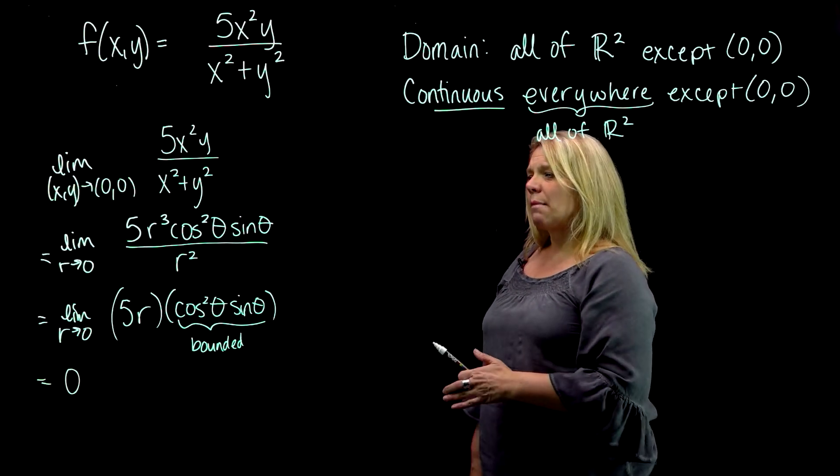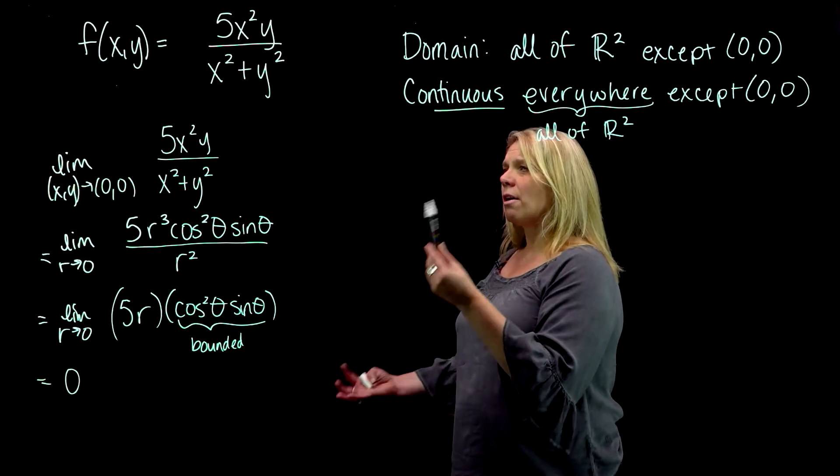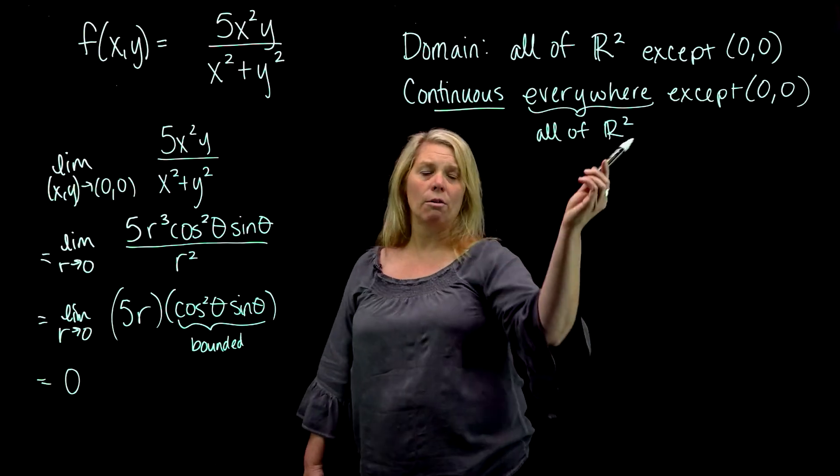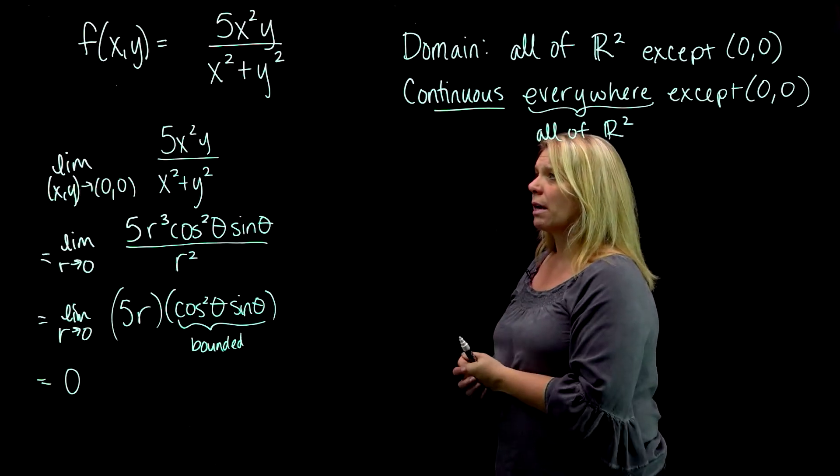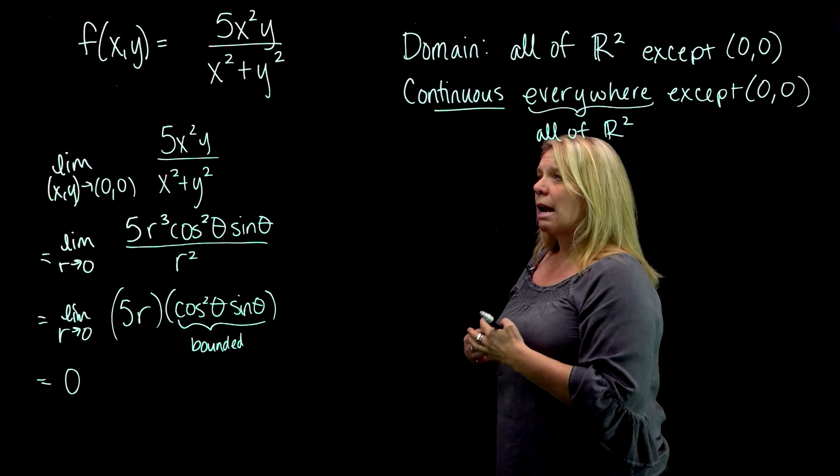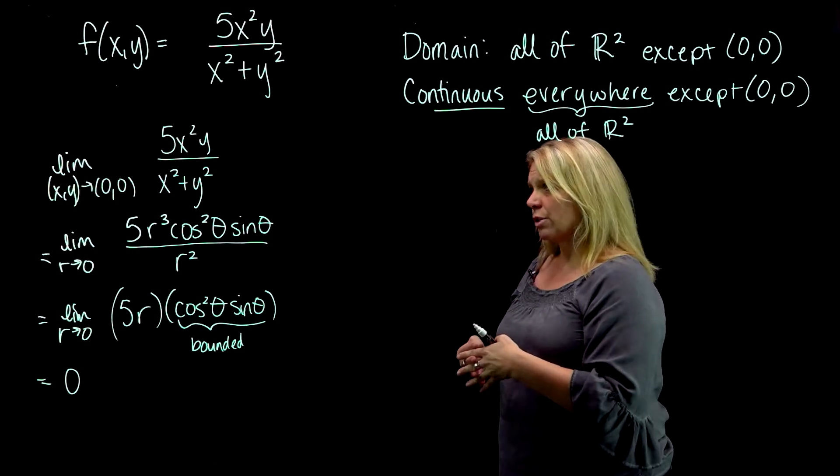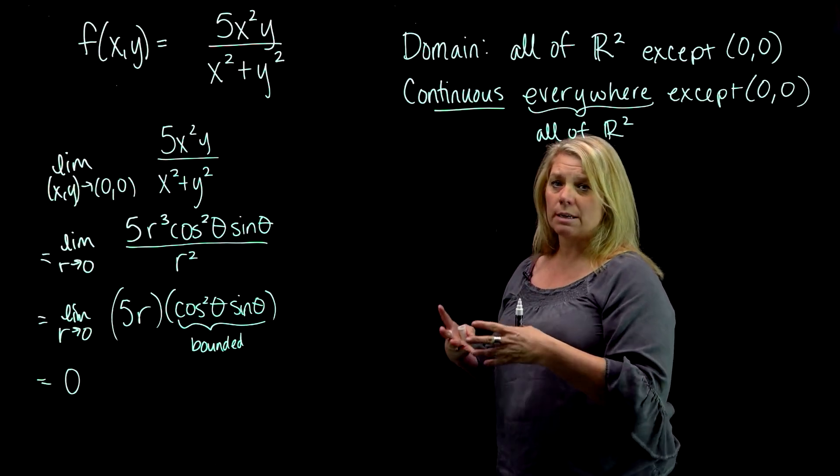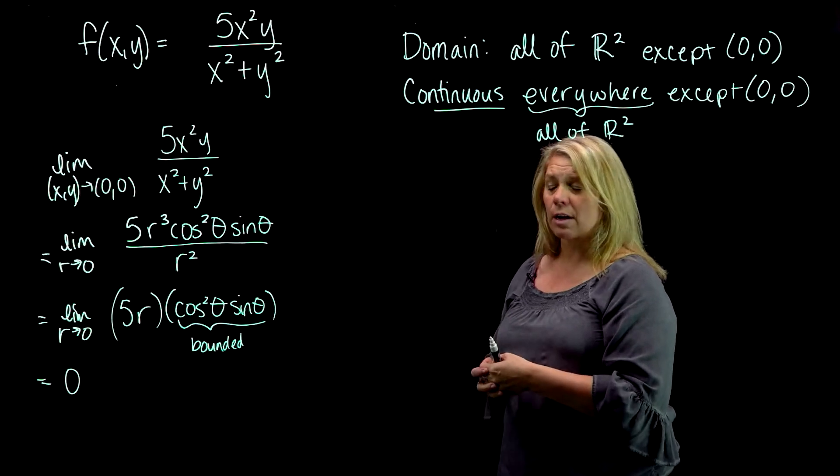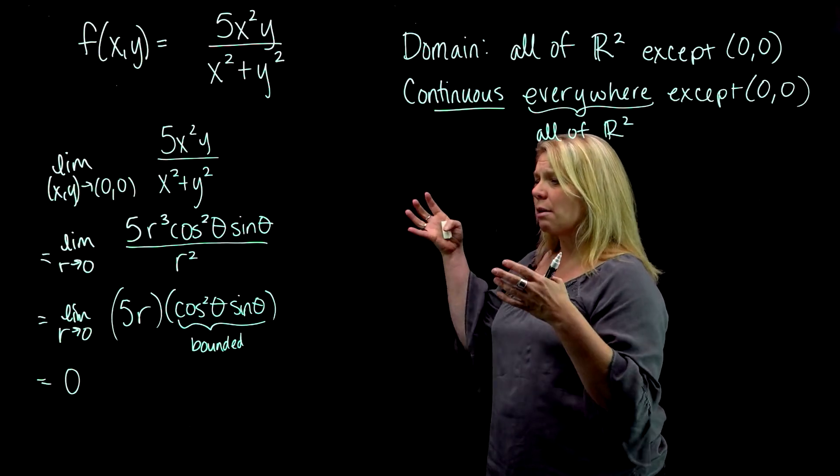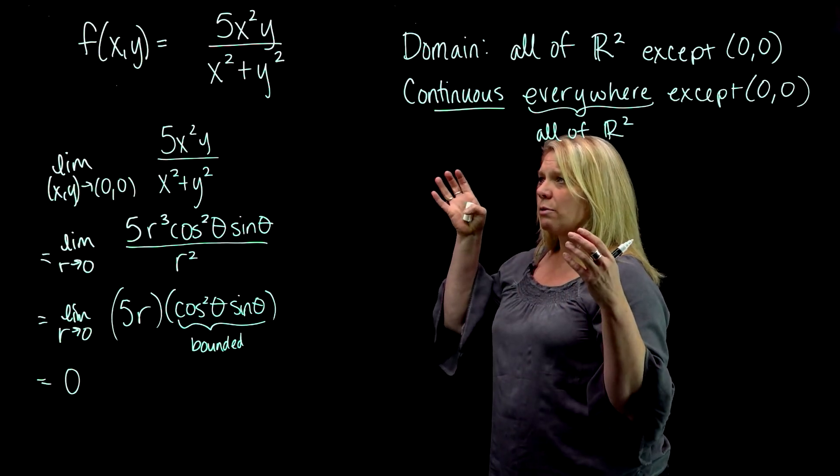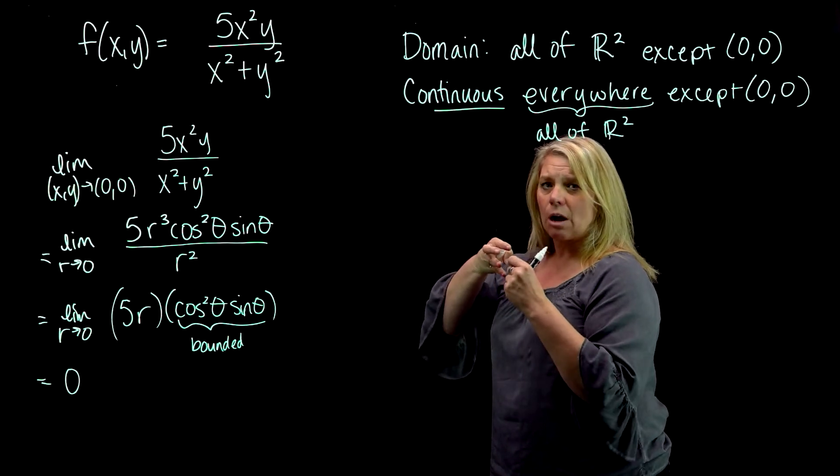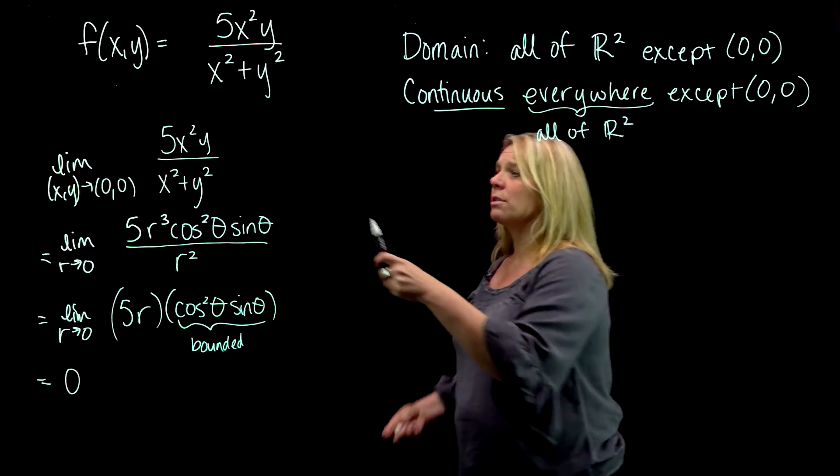Okay. So what that means is that although this function is undefined at the origin, it's continuous everywhere except the origin, that when we get really close to the origin, those z values are approaching zero. We actually had looked at the graph of this function and it was a little bit of a strange graph, but as we got close to the origin, we said there's really a hole there at (0, 0), and zero for the output.